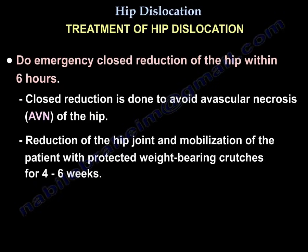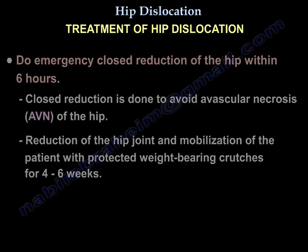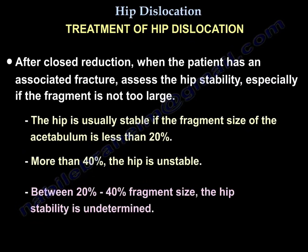Treatment of hip dislocation involves emergency closed reduction within 6 hours to avoid avascular necrosis. After reduction, mobilize the patient with protected weight-bearing crutches for 4 to 6 weeks. After closed reduction, when the patient has an associated fracture, assess the stability — especially if the fragment is not too large. The hip is usually stable if the acetabular fragment size is less than 20%; if it is more than 40%, the hip is unstable. Between 20–40%, hip stability is undetermined.